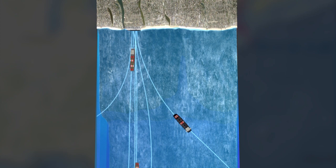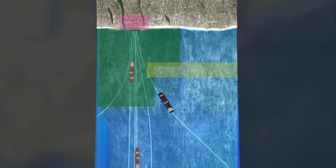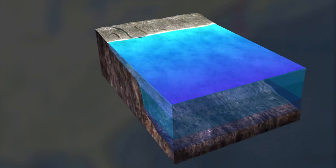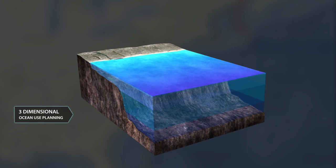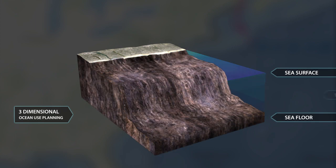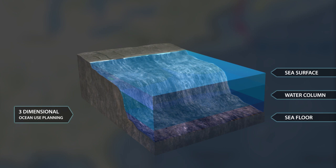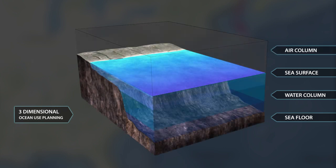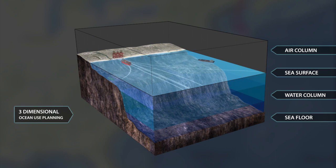Because most maps are two-dimensional, they can leave the false impression that the ocean contains virtually no unused space. In fact, information about the ocean spans three dimensions and includes the sea surface, seafloor, water column, and air column. Some ocean activities and their correlating data apply to several dimensions, meaning that many ocean activities do not intersect at all.